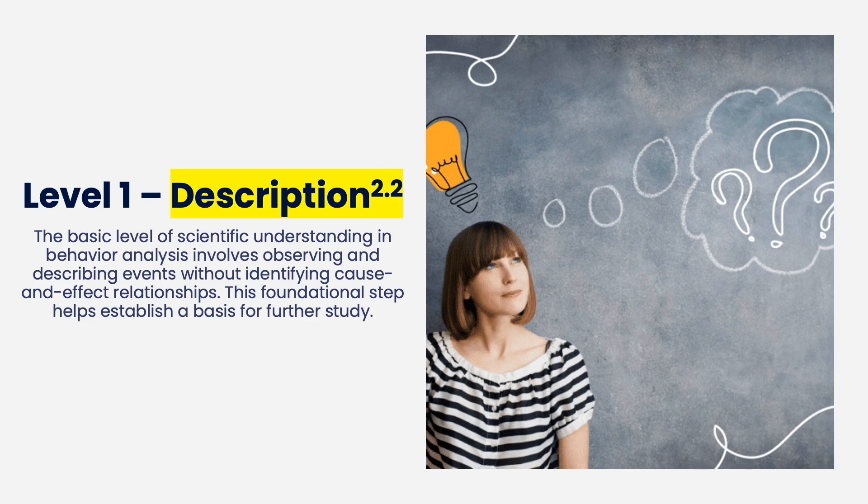The first is description. This is the most basic level of scientific understanding, observing, and describing events without any cause or effect relationship. It's the foundational step to determine if we should study this more. Observing how much problem behavior there is in a school, and there's a lot, so maybe we need to move to level two and determine the cause of that behavior. Anytime you're just observing, this would be description.